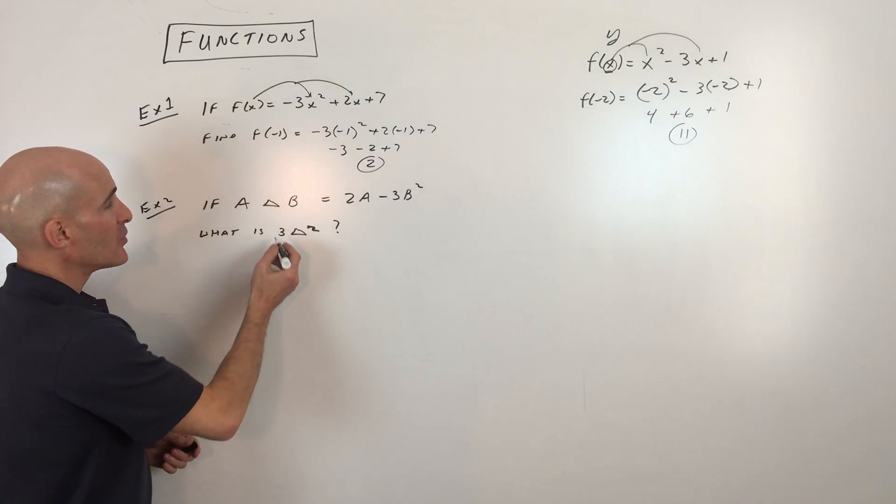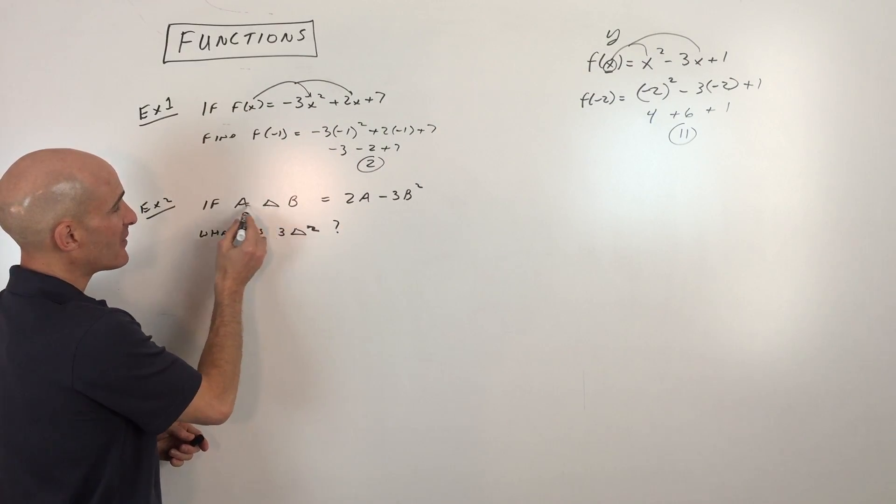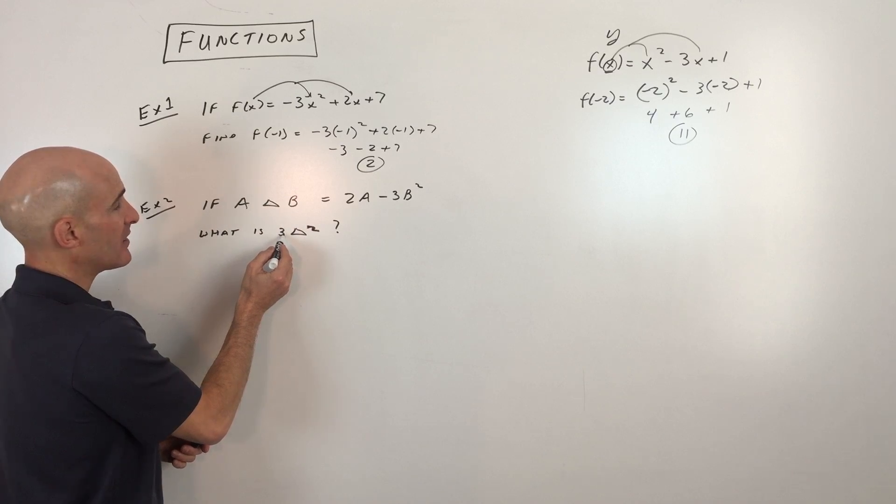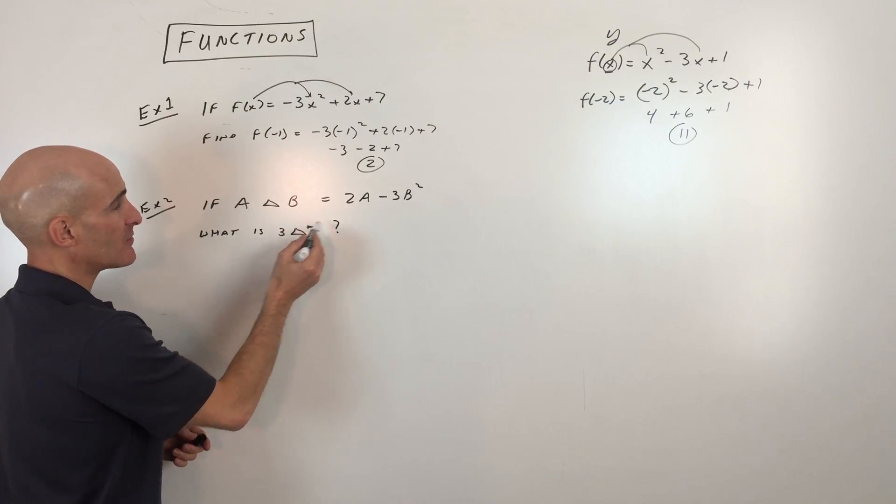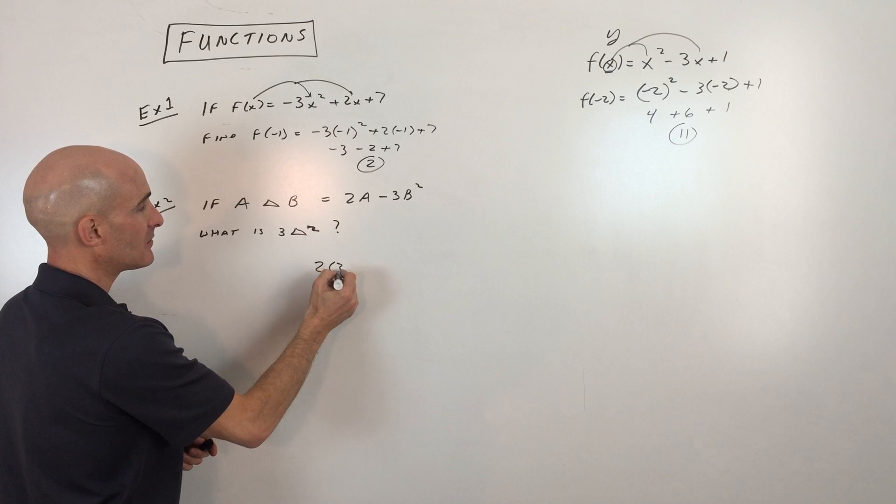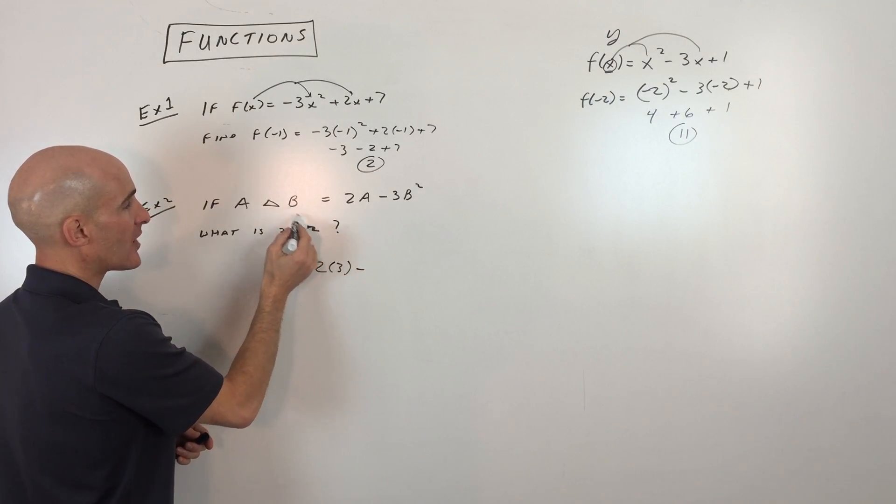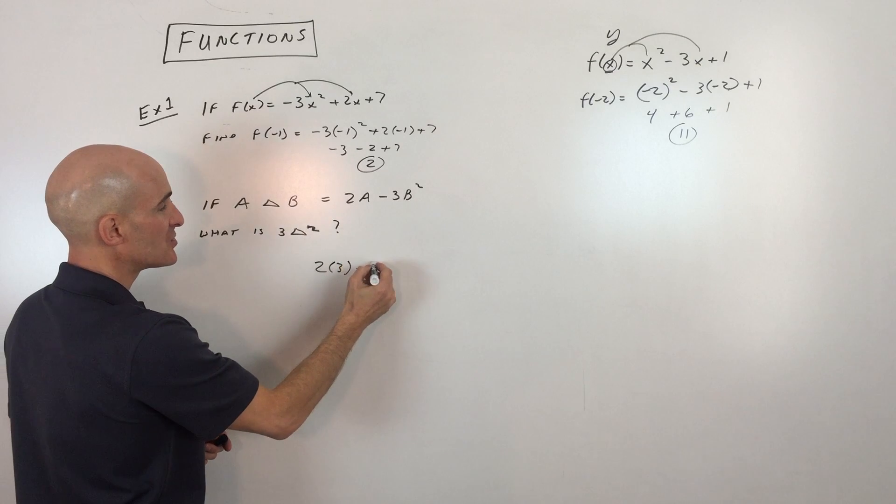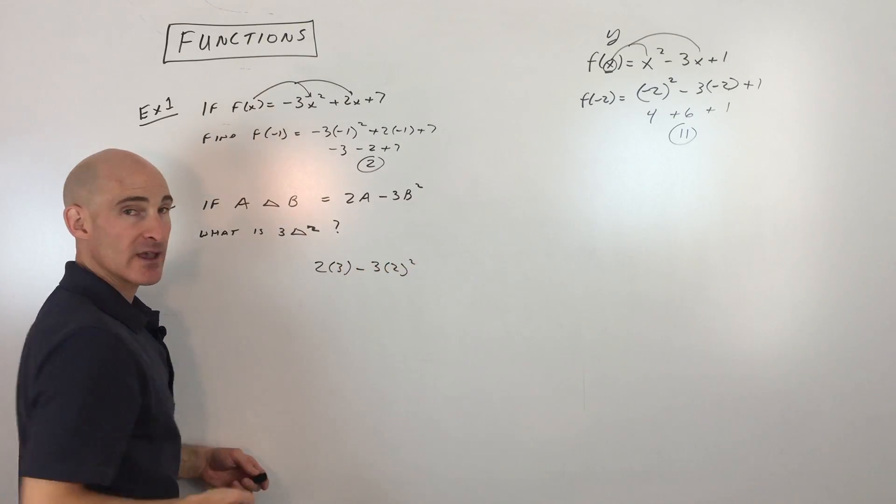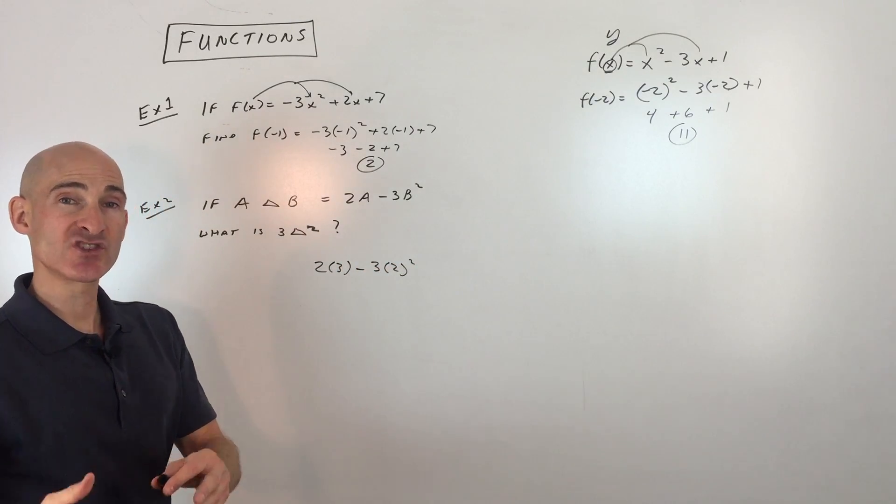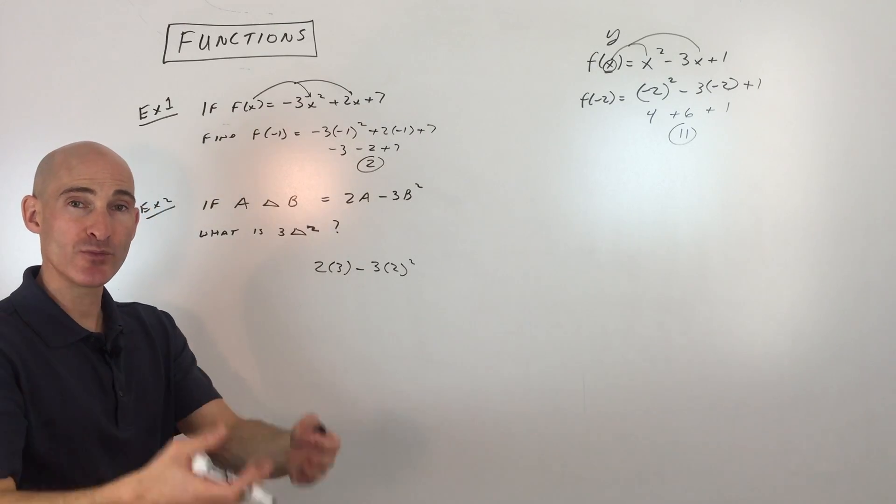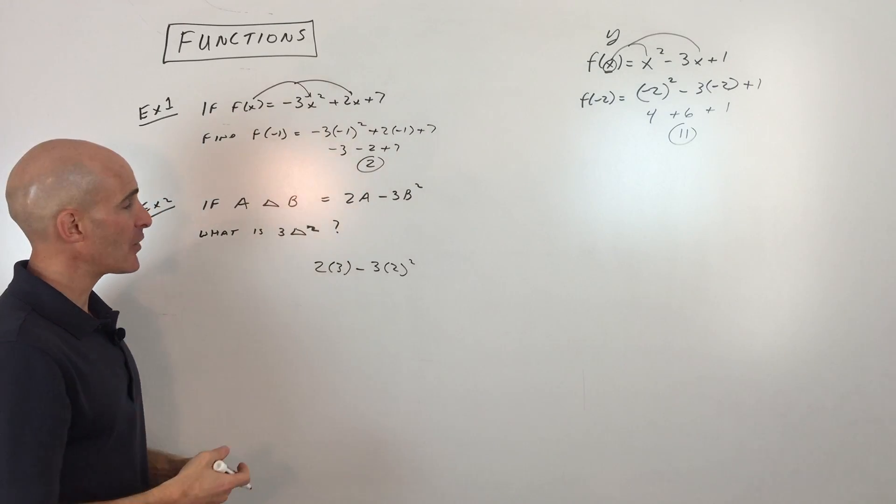So if we're going to solve this, you can see the pattern here. Whatever's in front of that triangle, that's 3, and that's going to be our a value, right? So I'm just going to put 3 in place of a, and then whatever comes after the triangle to the right of the triangle, that's our b value. So you can see b is 2. Okay, so really you can see the way functions work. It's just like a substitution. It tells you what your input is, and you go ahead and put that value in and simplify.